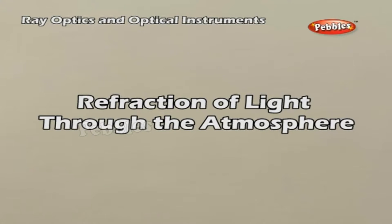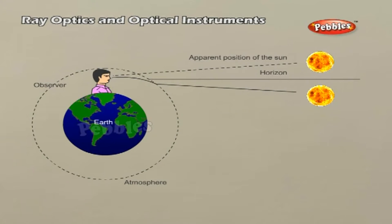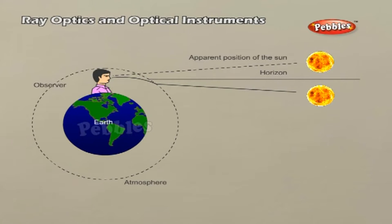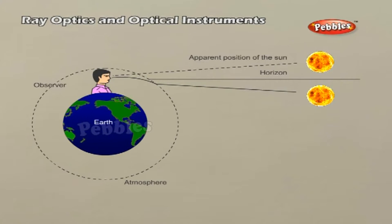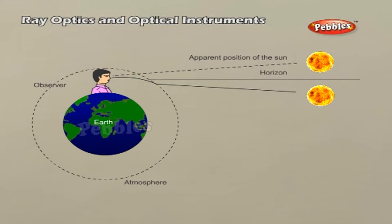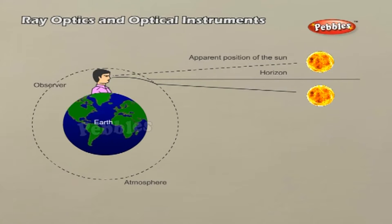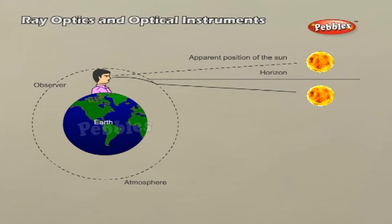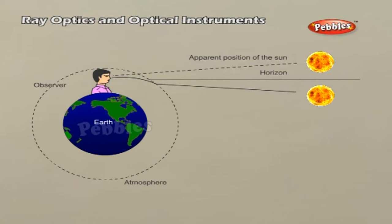Refraction of light through the atmosphere. For example, the sun is visible a little before the actual sunrise and until a little after the actual sunset due to refraction of light through the atmosphere. By actual sunrise, we mean the actual crossing of the horizon by the sun. The figure shows the actual and apparent positions of the sun with respect to the horizon; the figure is highly exaggerated to show the effect.